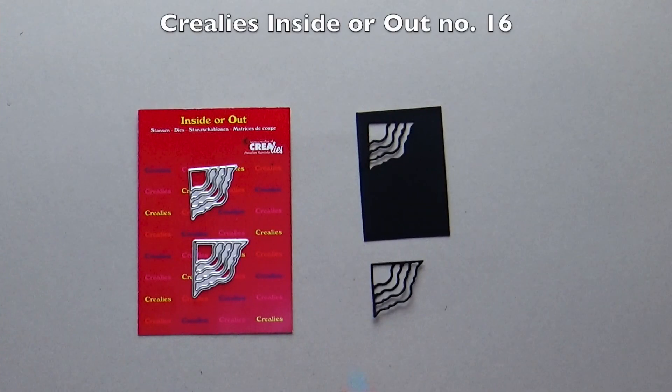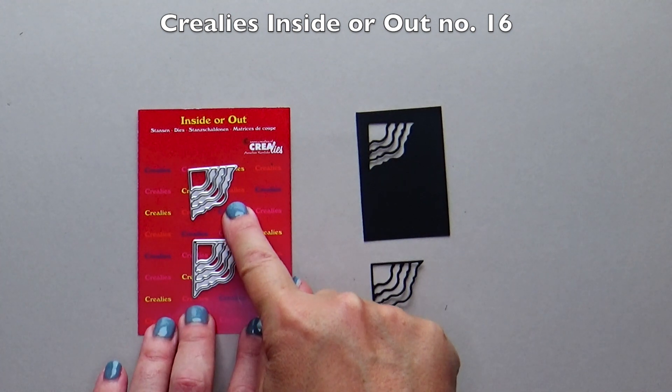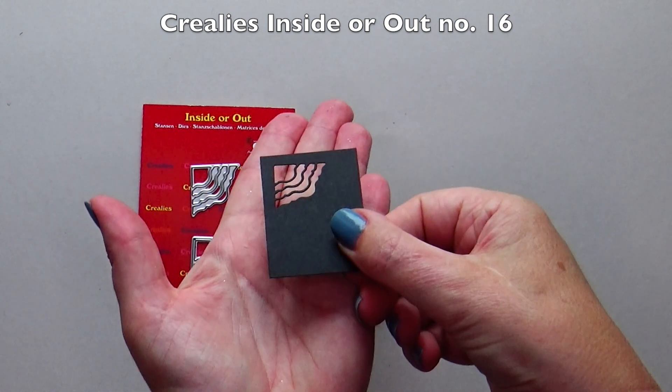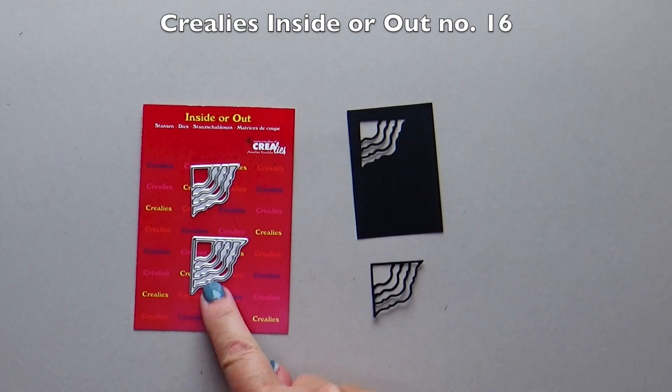Use inside or out number 16. This set consists of an inside and an outside die. The inside die only die cuts into the cardstock. You can slide something behind the die-cut area. The outside die cuts the complete corner.